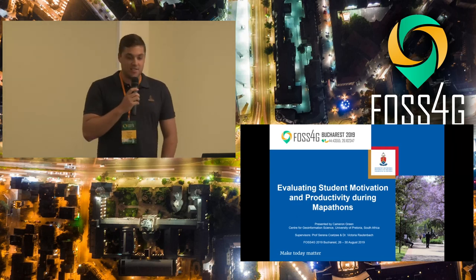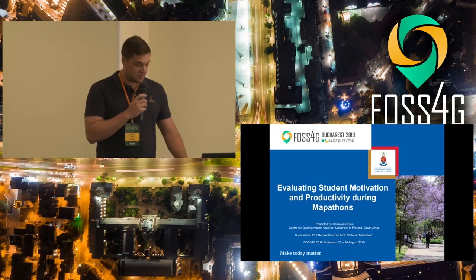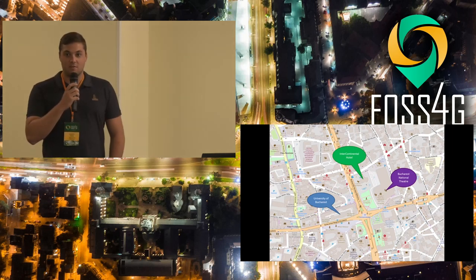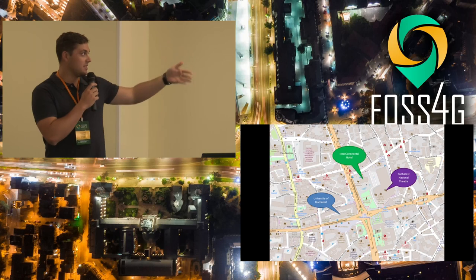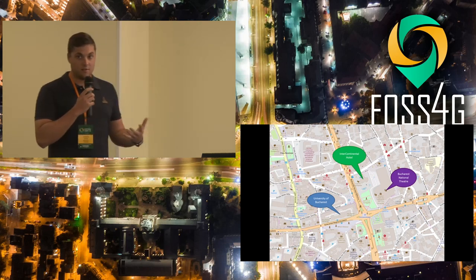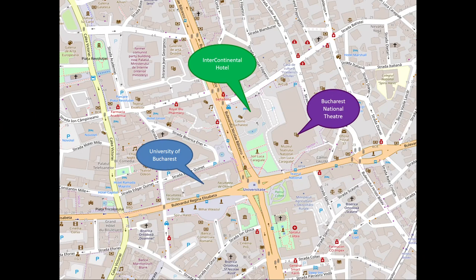My project, or the project that we worked on, was evaluating student motivation and productivity during mapathons. You can see here this is clearly an OpenStreetMap of Bucharest — you can see the Intercontinental where we are, the theatre, and the university — and you can see how dense and how much information there is. OpenStreetMap was created for the purpose of open data; a gentleman by the name of Steve Coast actually created the concept, and now it has boomed into the project we all know today.